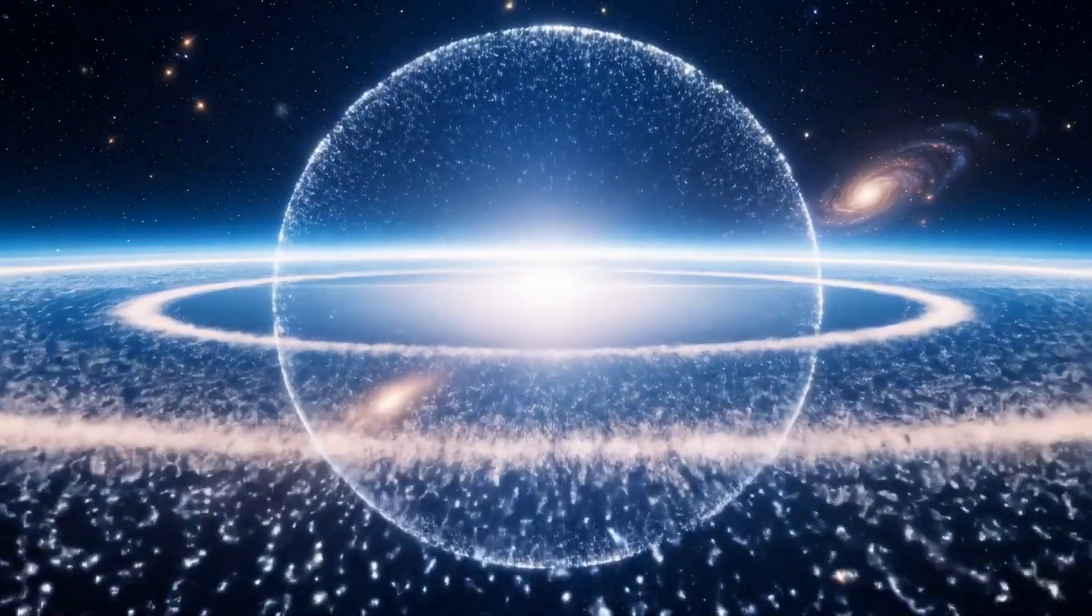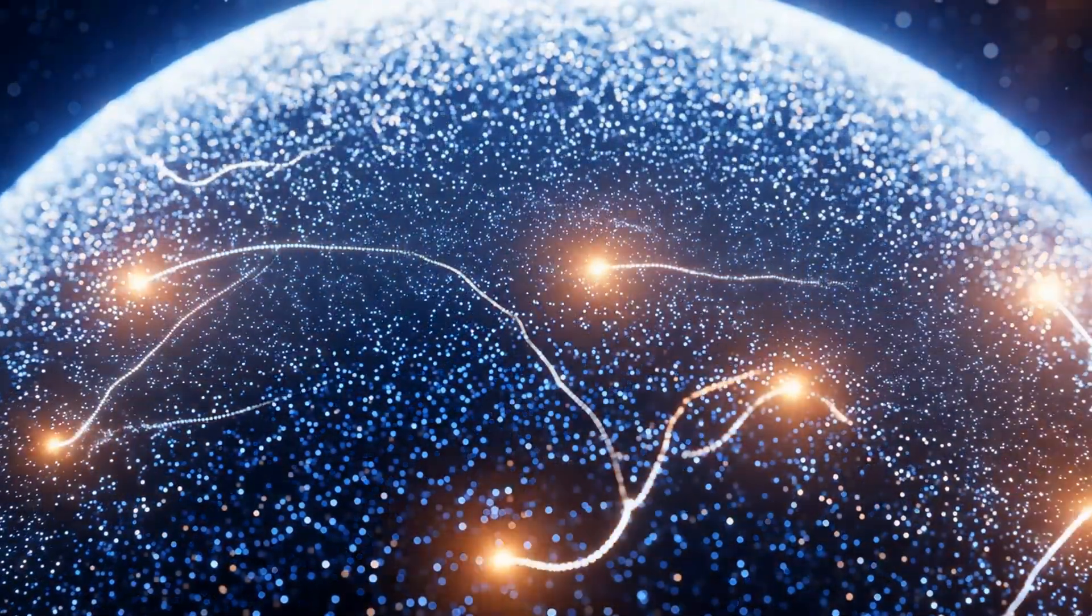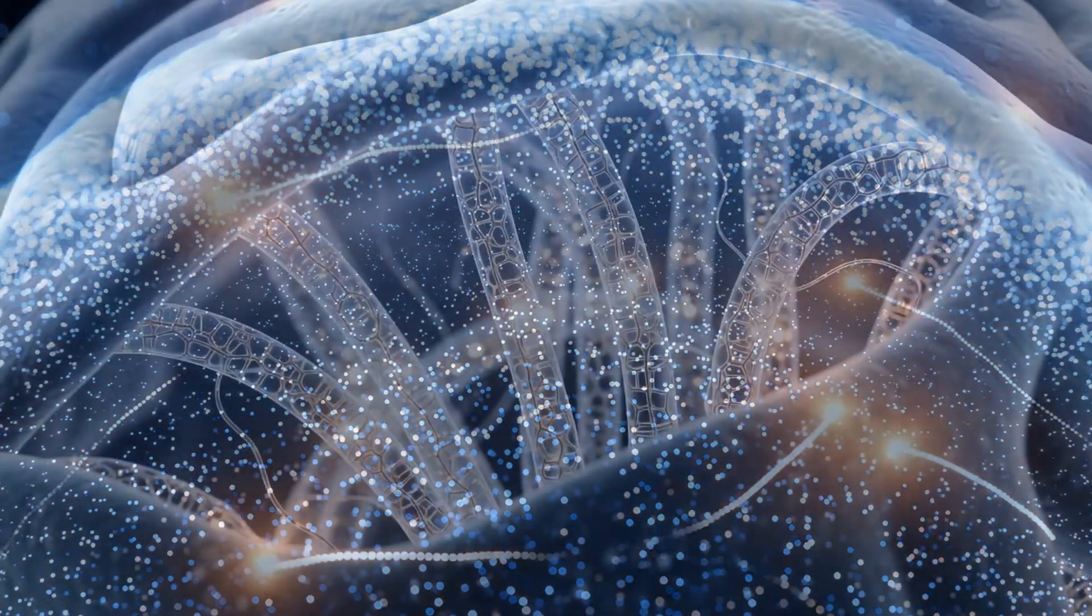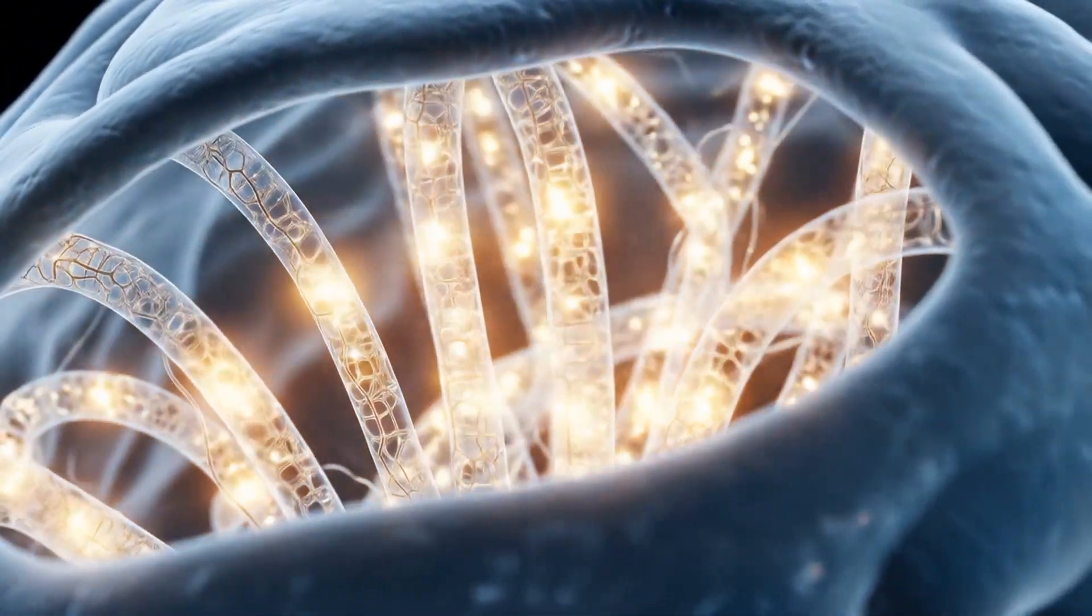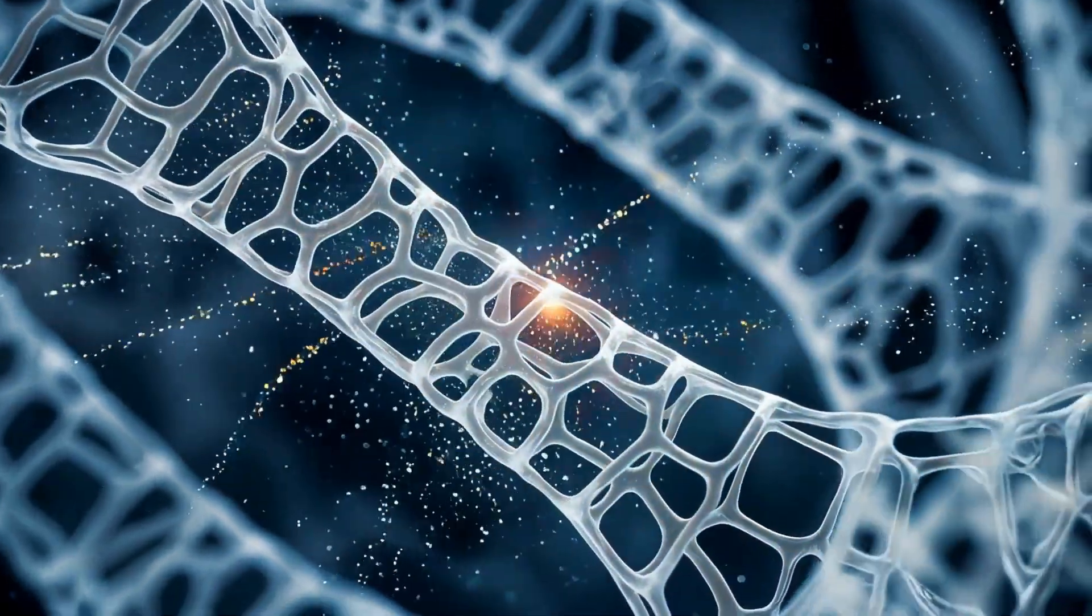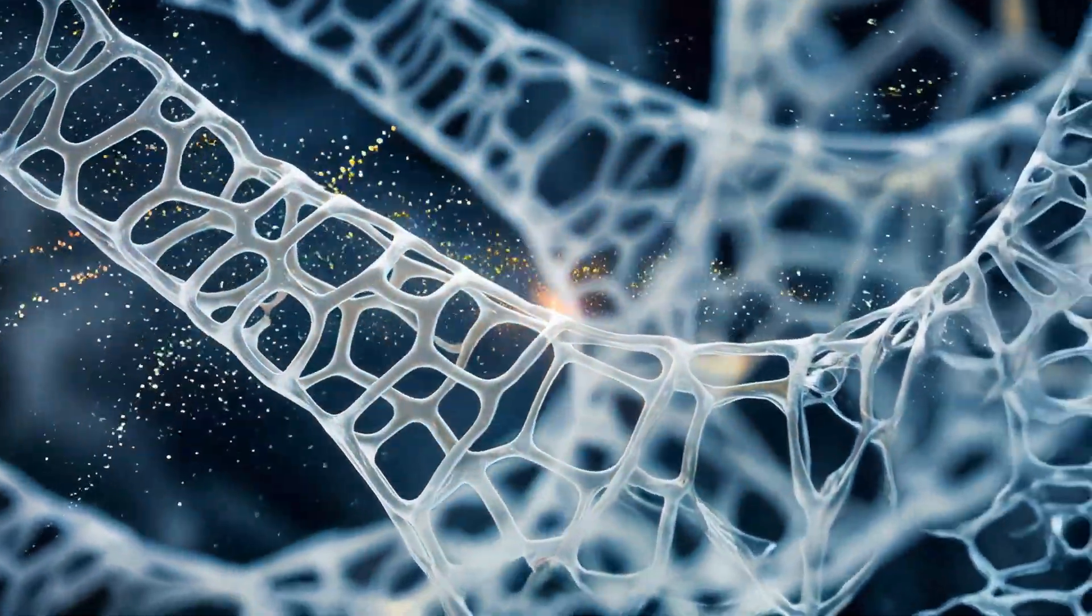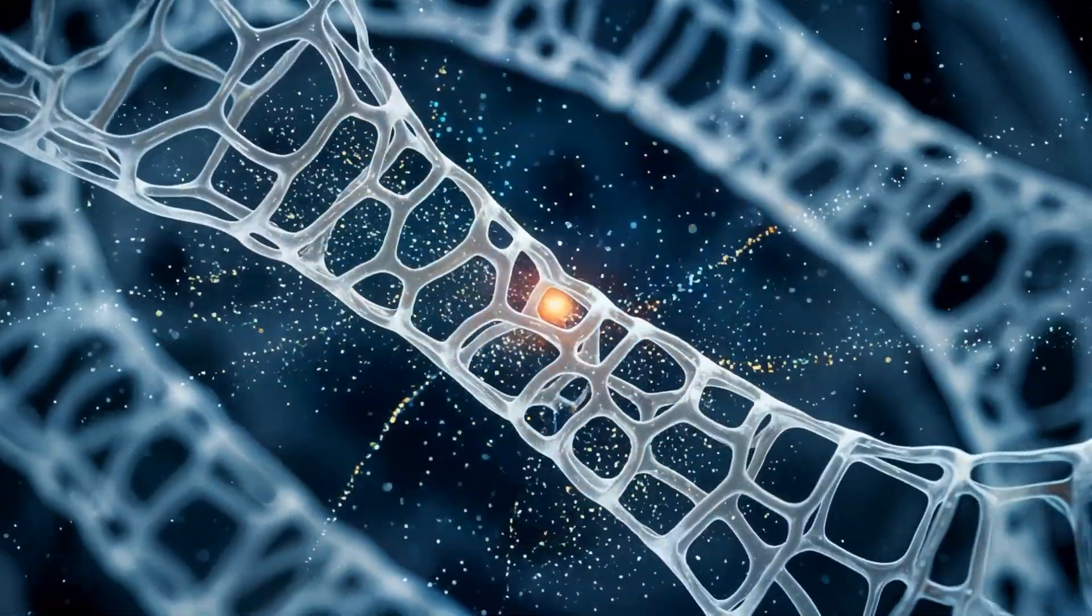Inside your brain are microtubules, quantum lattices of light. Each one is a Planck scale detector, a biological qubit that receives and decodes the projected interference. They are tuned to the same angular metronomes as the event horizon.